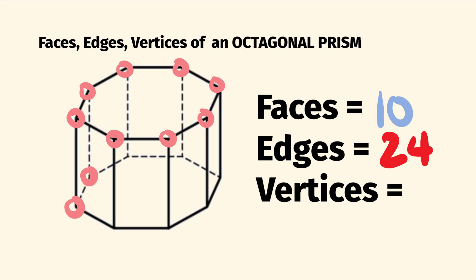And you're going to probably guess how many on the bottom: 1, 2, 3, 4, 5, 6, 7, 8 on the bottom. 8 plus 8 — all together, there are 16 vertices.